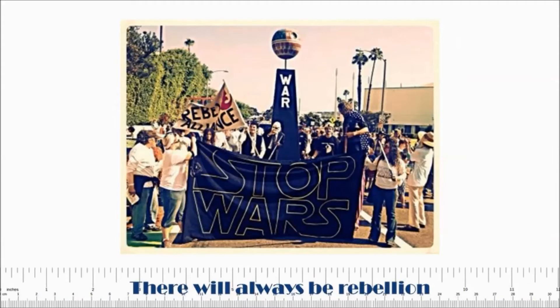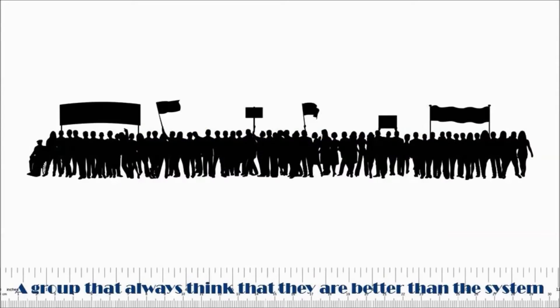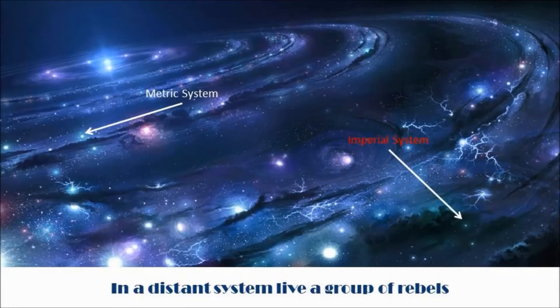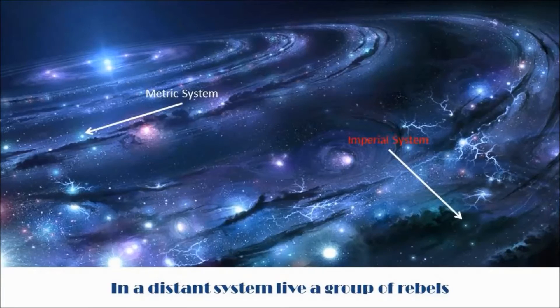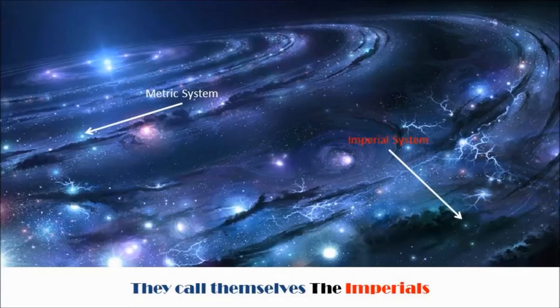But as with any prosperous society, there will always be rebellion. A group that always thinks that they are better than the system. In a distant system, lives a group of rebels. They call themselves the Imperials from the Imperial system.